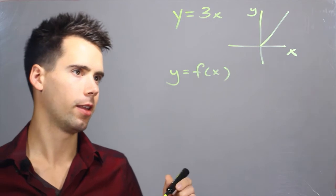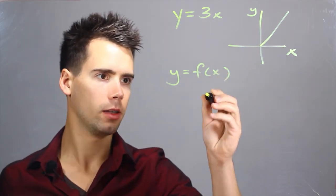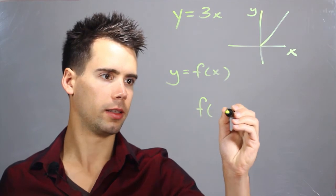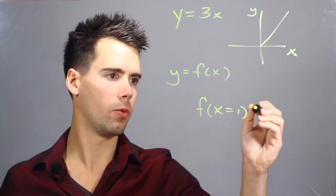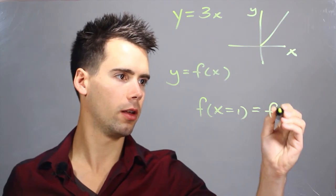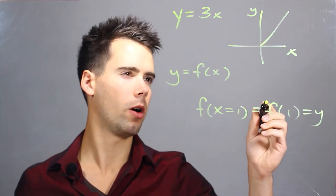And what this means is that when you have a certain independent variable x set to some value, for instance x is equal to 1, then what you are really getting is a function of 1, which is equal to the value of y when x is equal to 1.